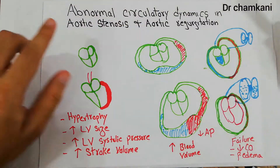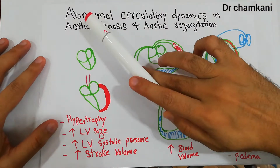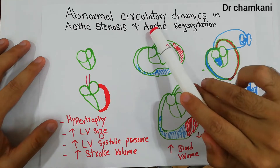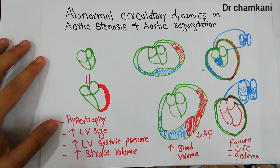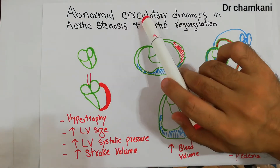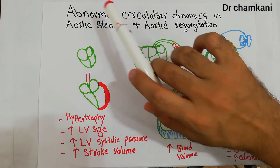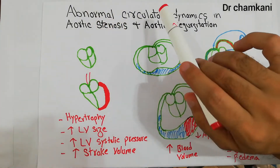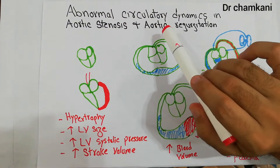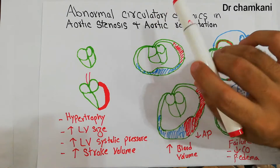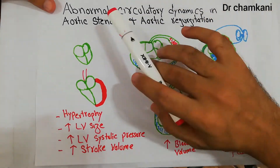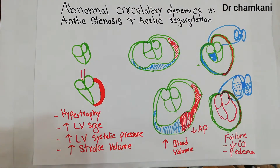Today in this lecture we are going to discuss the abnormal circulatory dynamics in aortic stenosis and aortic regurgitation — what abnormalities basically occur when there is aortic stenosis or aortic regurgitation or both. We will discuss the abnormal circulatory dynamics one by one.